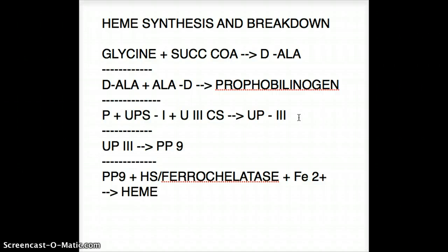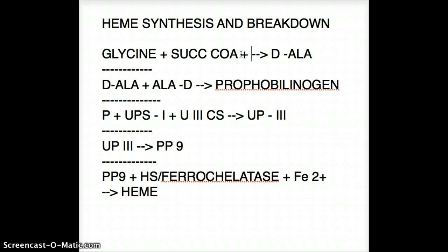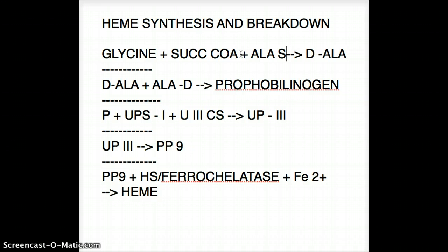So these are the four steps of getting to heme. Let's quickly go over it one more time. We start off with glycine combining with succinyl-CoA, giving us delta-ALA. The enzyme used here is ALA synthase. Then delta-ALA combines with ALA dehydratase, giving us our first heme-looking compound called porphobilinogen.